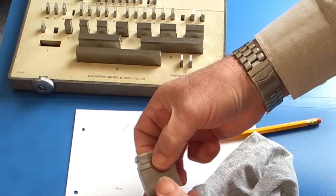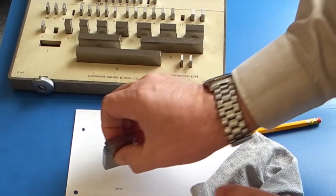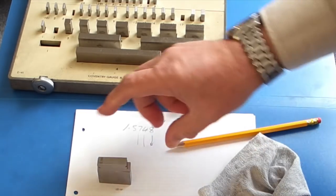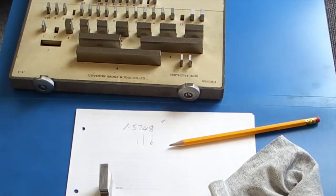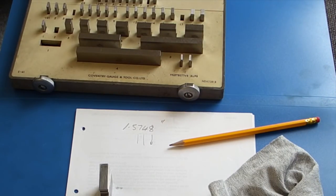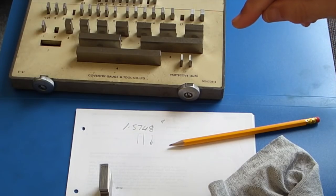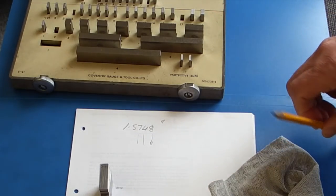There we have the build up. See, they're all stuck together. That build up gives us 1.5748. Now if you have a calibration certificate with your set, you can check the accuracy of this stack by adding the errors together from the calibration certificate.